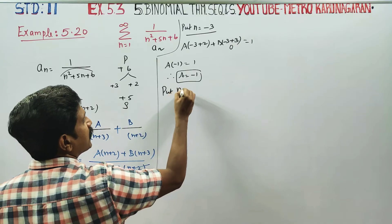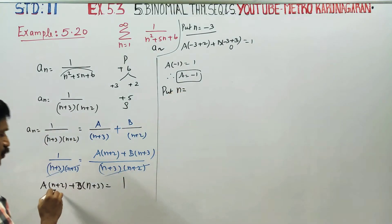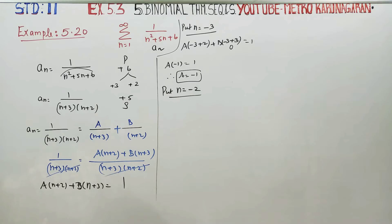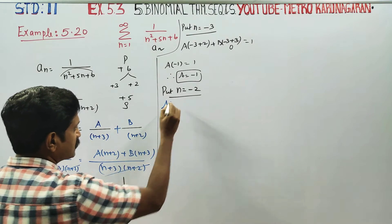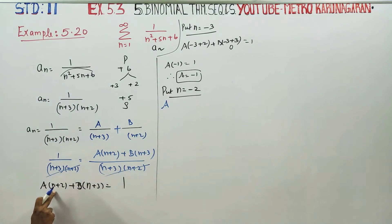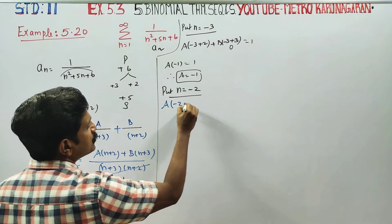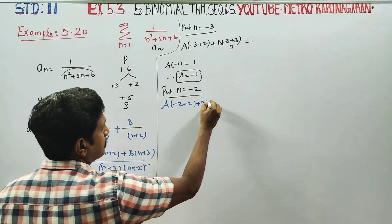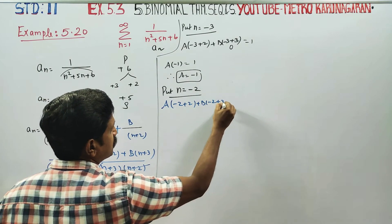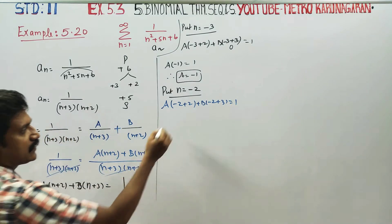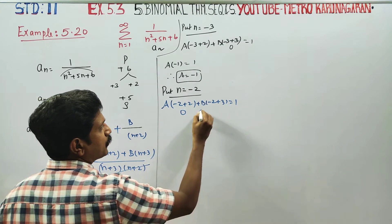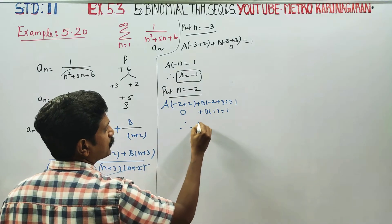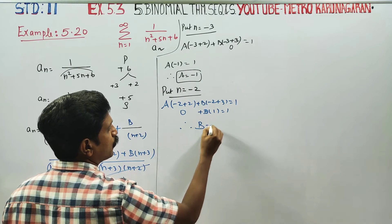Now put n equal to minus 2. Then a into (minus 2 plus 2) equals 0, so b into (minus 2 plus 3) equals 1. That gives b into 1 equals 1. Therefore, b is equal to 1.